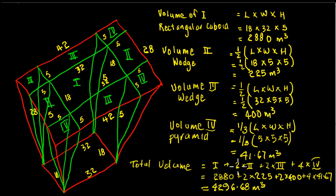And so we know that, or can be approximated with a pyramid. The volume of a pyramid, of course, is a third of the length times the width times the height of the pyramid. So just looking at our shapes here, a rectangular cuboid is 18 by 32, which is 2,880 meters cubed.